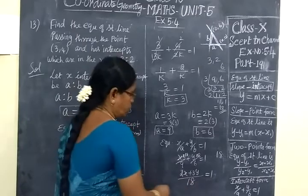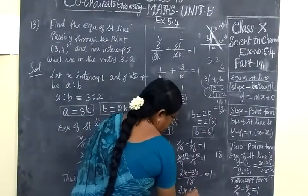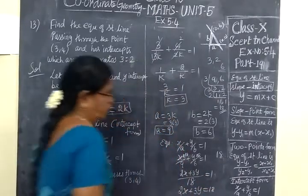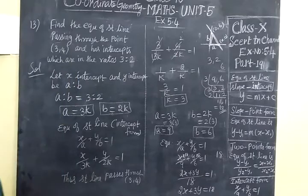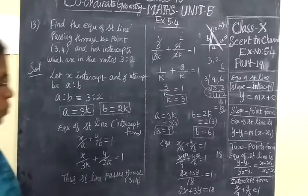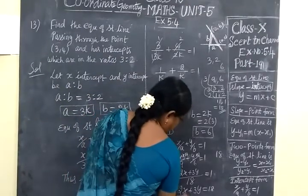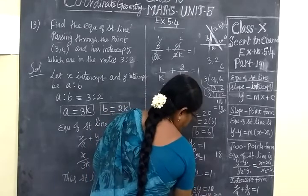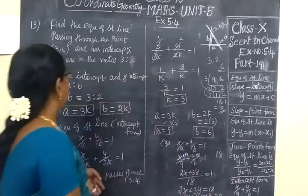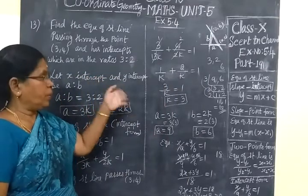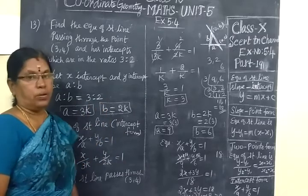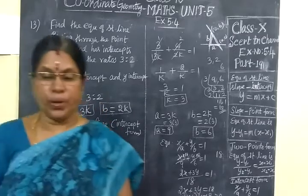So 2X plus 3Y equals 18. For the standard form, 2X plus 3Y minus 18 equals 0. So 2X plus 3Y minus 18 equals 0 is the required equation. This is an important question. Thank you.